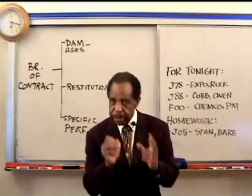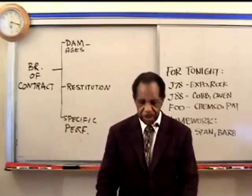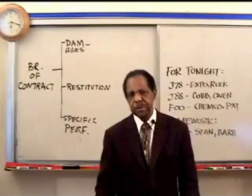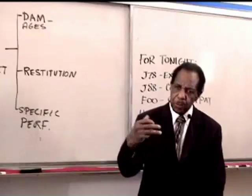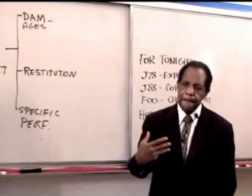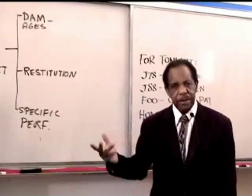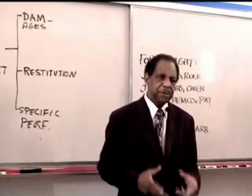Then you can sue for that tort. For example, you see it with insurance companies where if I have a contract with an insurance company to defend me in a lawsuit, the insurance company is treated as my fiduciary. If my fiduciary doesn't do what it's supposed to do, that's a violation of fiduciary duty — that's a tort — and I may get punitive damages for that. But the point is there are no punitive damages for breach of contract. If you want punitive damages, you've got to get them from some other kind of claim.